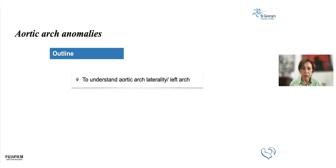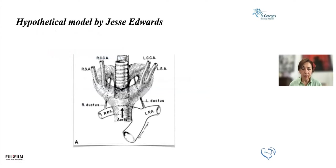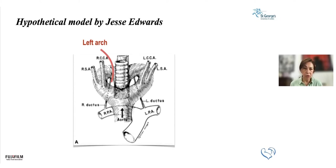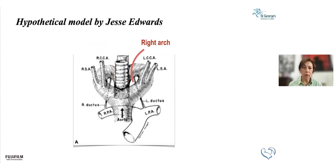To understand aortic arch laterality, I'm going to take you back to very early in pregnancy using this hypothetical model by Jess Edwards, where we all have two arches in the embryonic phase. Subsequently, one of the arches will disappear — normally the right arch disappears, giving a normal left arch to the majority of people. Contrary to that, in a smaller proportion — and we are now knowing it's not that uncommon — part of the left arch disappears, leaving the dominant right arch.